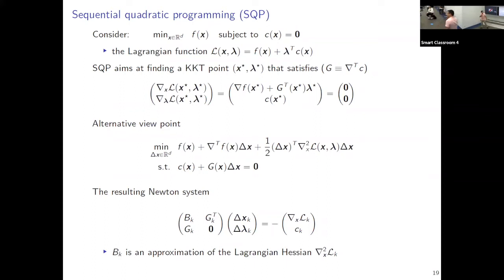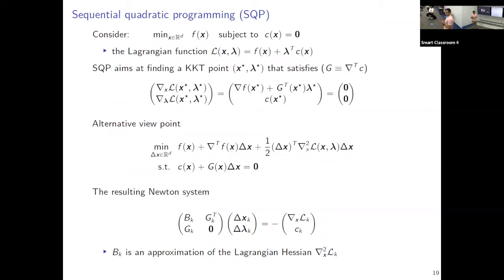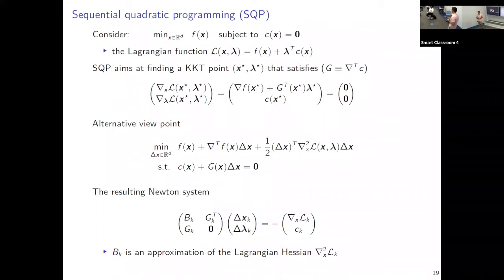Even after solving this system, a key question is: how much should we move in the direction delta_x, delta_lambda? In gradient descent we can do a line search, but for constraints it's more challenging. Moving to reduce the objective might result in more constraint violation, while a move that improves feasibility might increase the objective. It's not immediately clear how much we should move and what updates to accept.